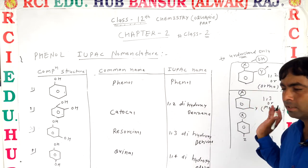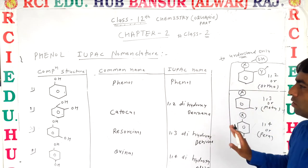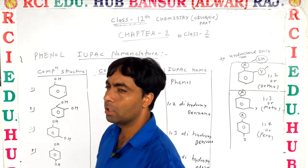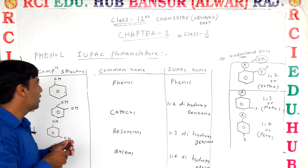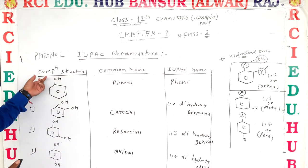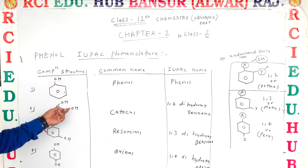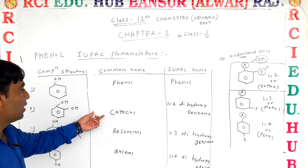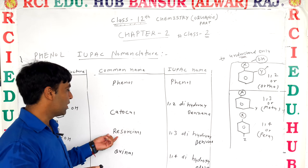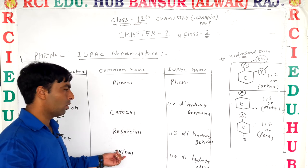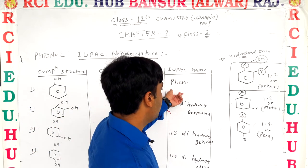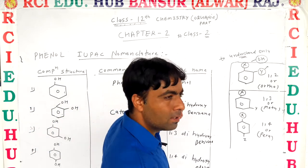These are the mostly useful components according to the general structure with respect to hydroxy groups: first is catechol, second is resorcinol, and third is quinol. The IUPAC names are also given.